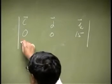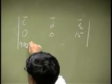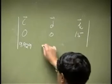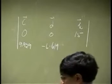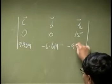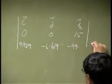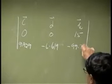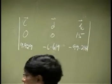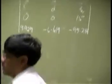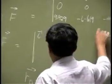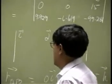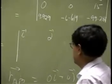which is 9.929, negative 6.619, then we have negative 99.286. That's one of those. Another one is another determinant. You have i, j, and k, that's the first row. Now we need RAC, we have...